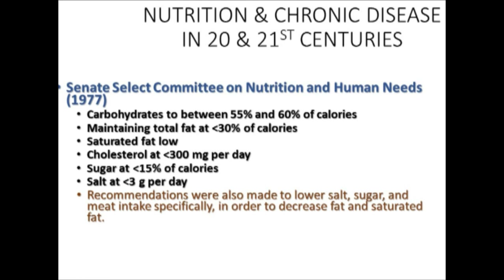In 1977, the Senate Select Committee headed by Senator George McGovern, along with the scientific community, attempted to recommend healthy ranges for macronutrient intake: carbohydrates at 55 to 60%, less than 30% of calories from fat to maintain lower cardiovascular disease risk, dietary cholesterol less than 300 milligrams, and — for the first and last time — a government recommendation limiting total sugar to less than 15% of calories and salt to less than 3 grams.